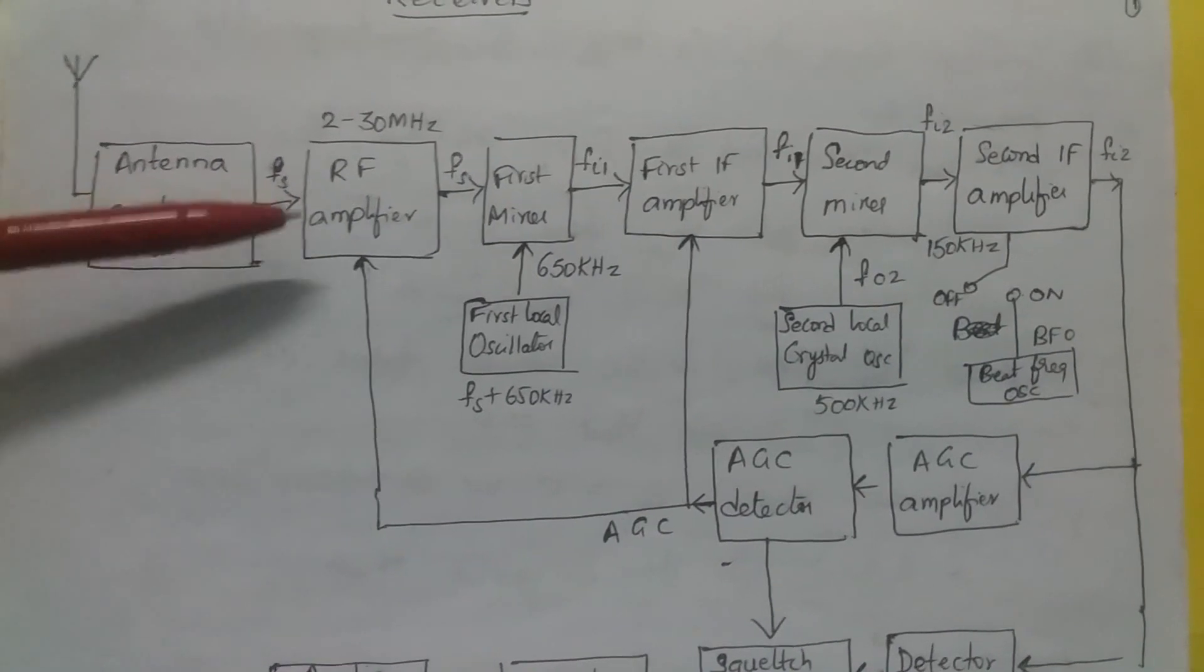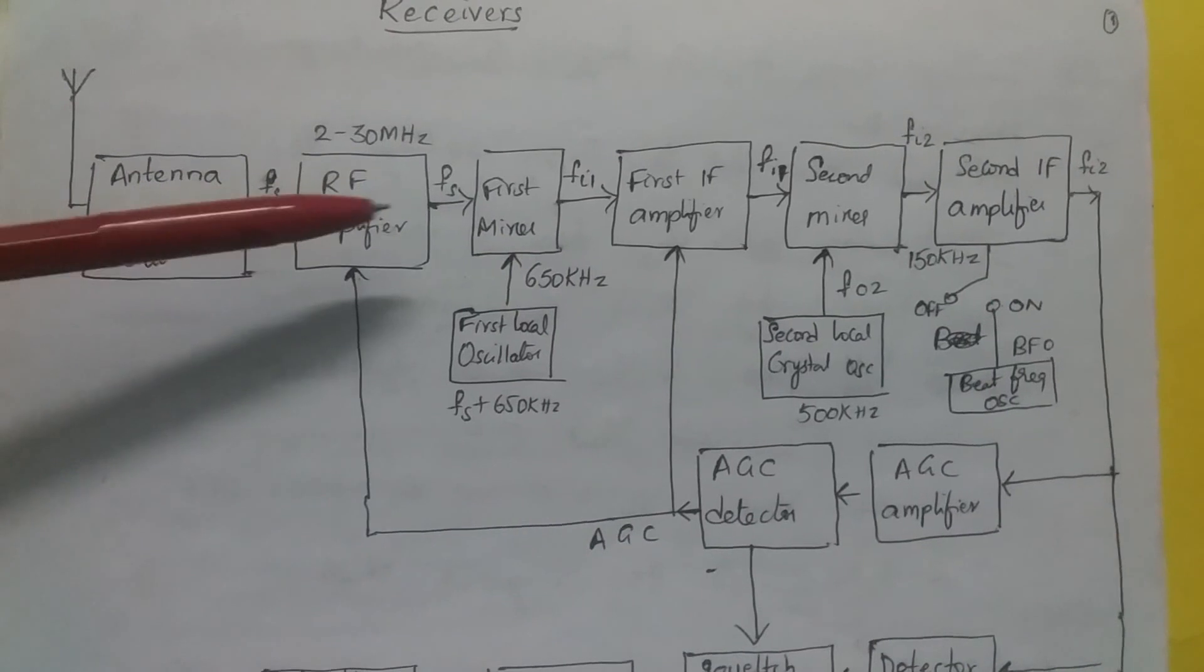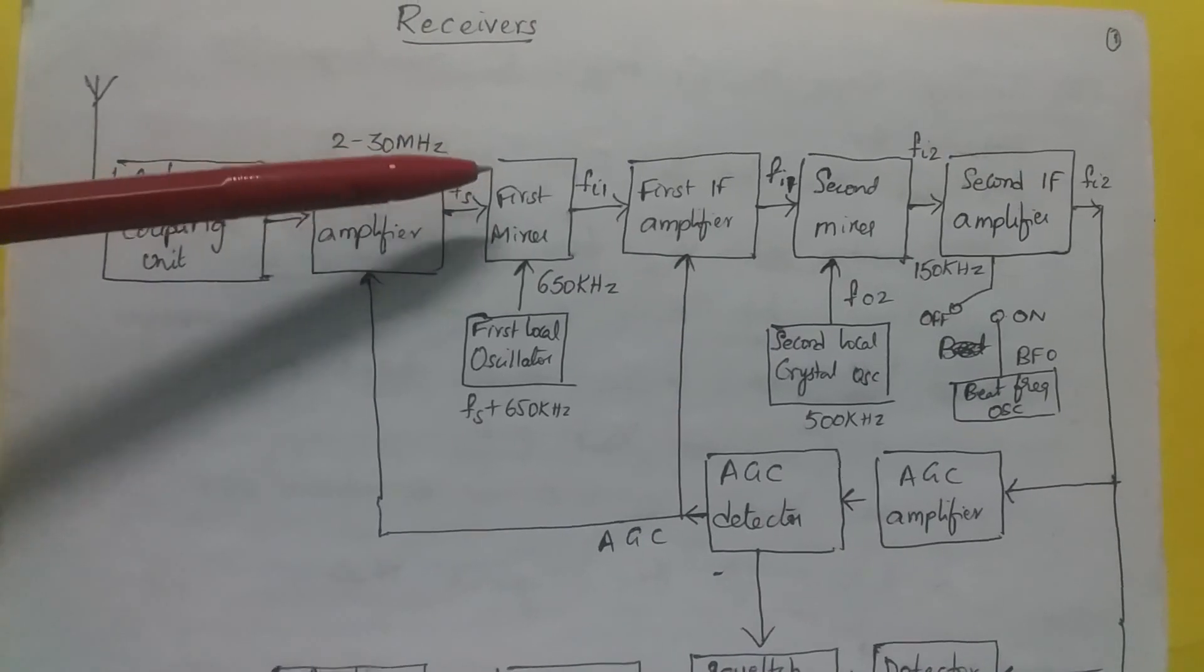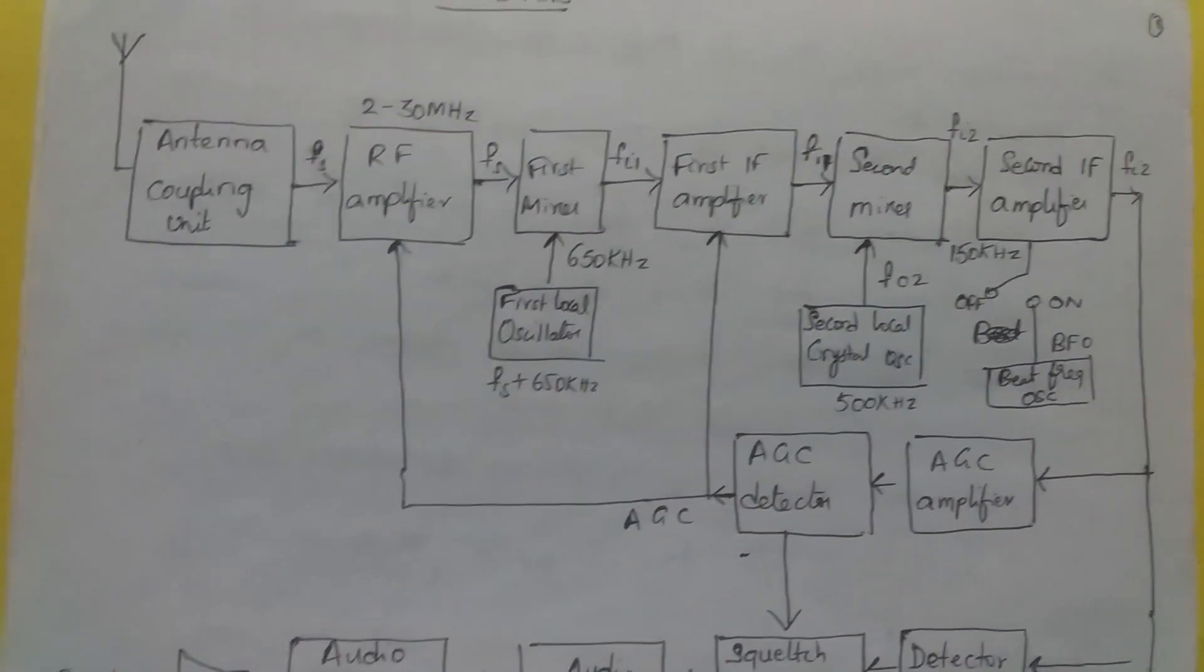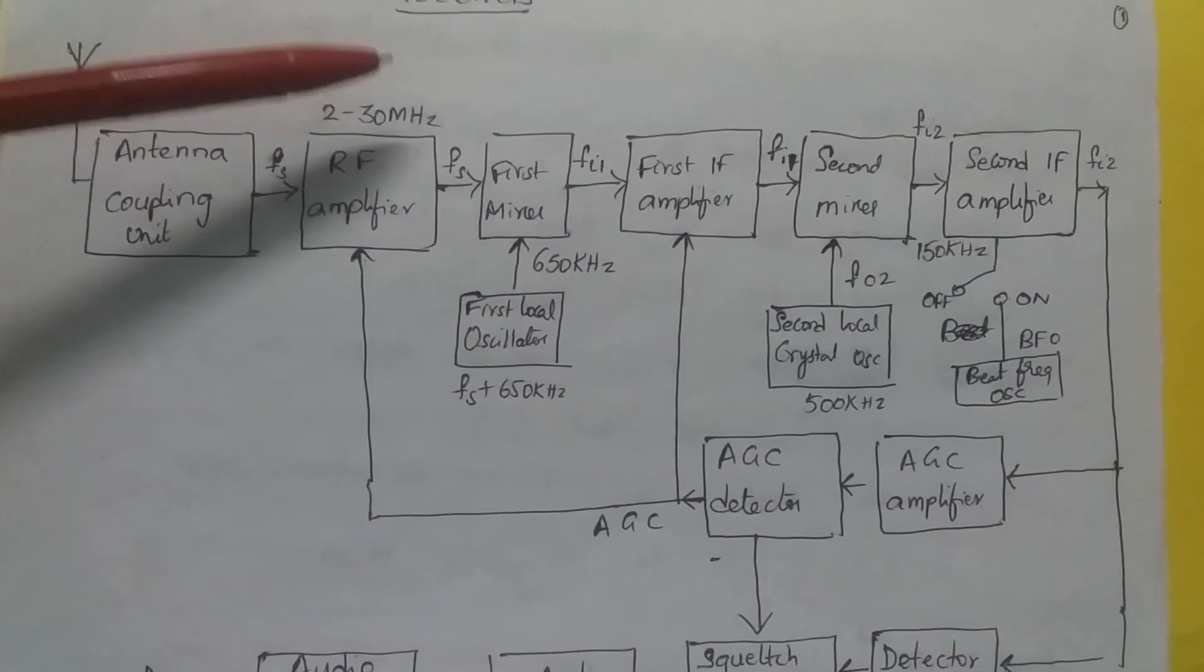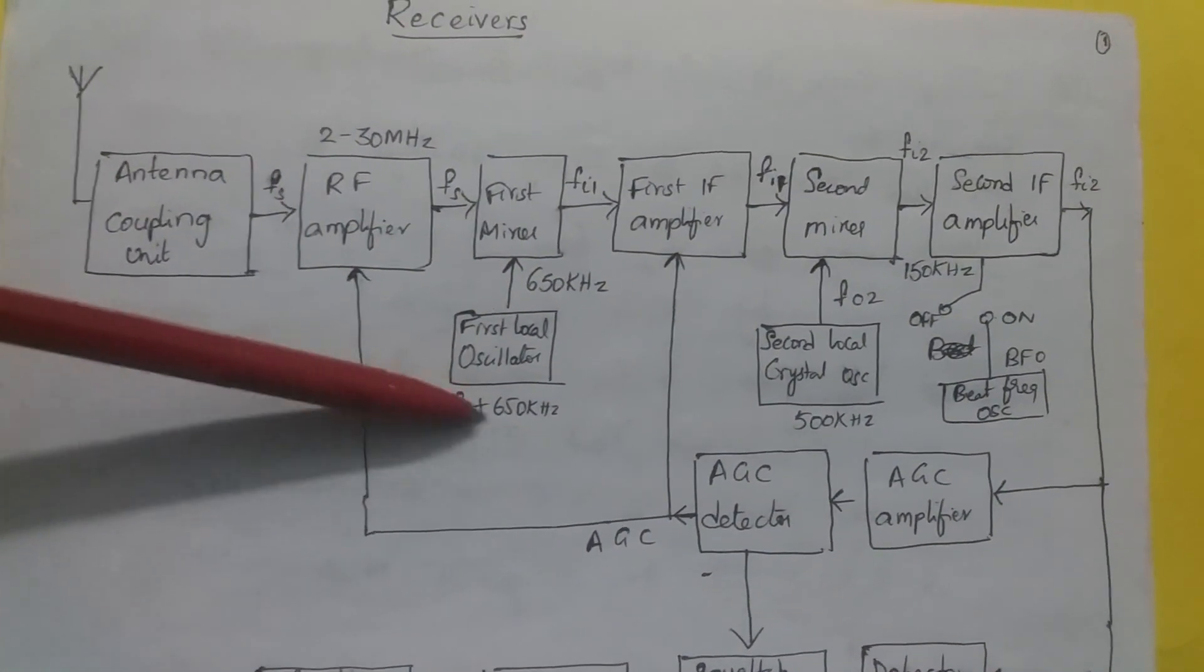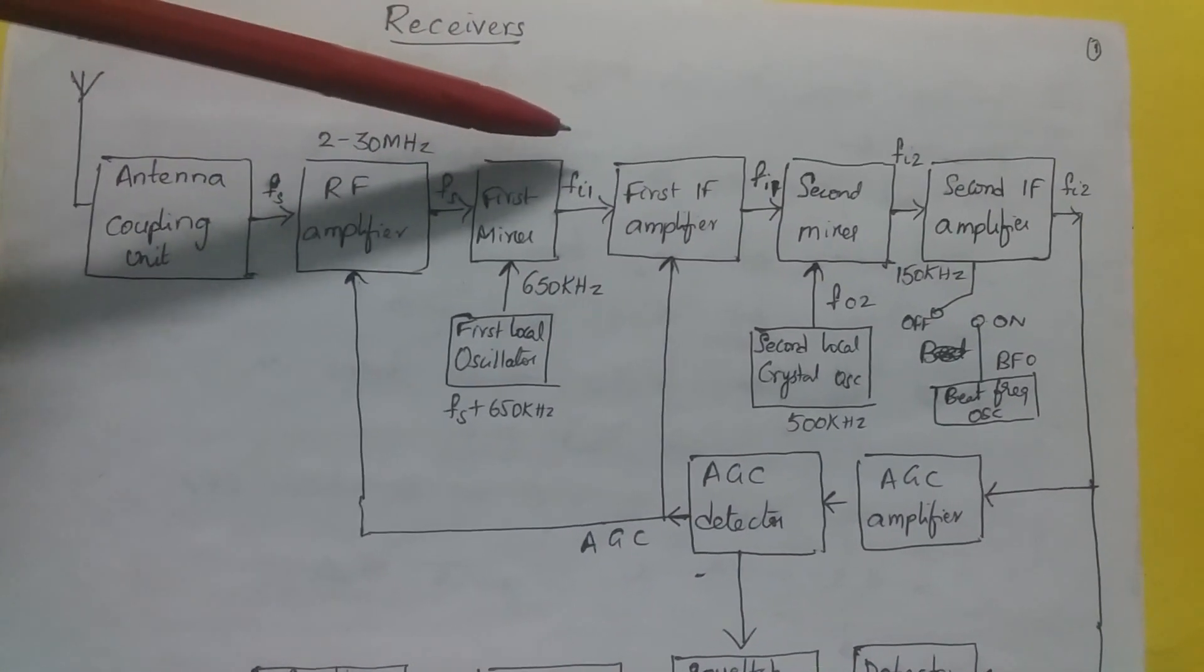This RF amplifier amplifies the signal to suitable level and passes it to the first mixer. At the mixer, there is a non-linear device. It combines FS and F0 and you get Fi1. The difference of FS plus 650 kHz minus FS is Fi1. So you get first IF signal.